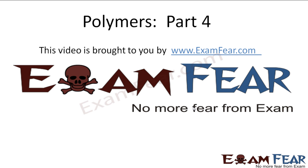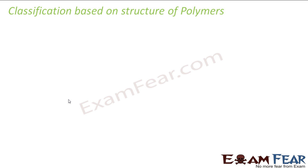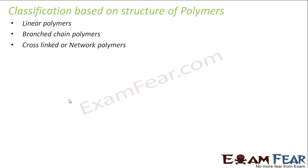Hello friends, this video on polymers part 4 is brought to you by examfear.com. The second way to classify polymers is based on their structure — how they look and how they behave. Based on their appearance, we classify them as linear, branched, and cross-linked.